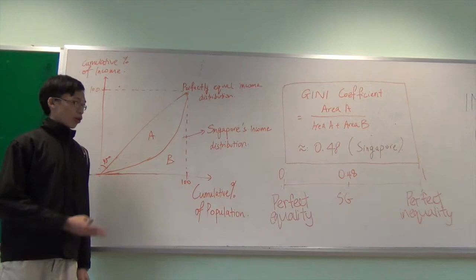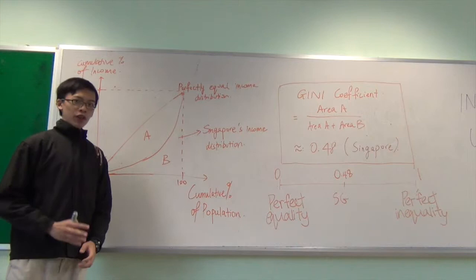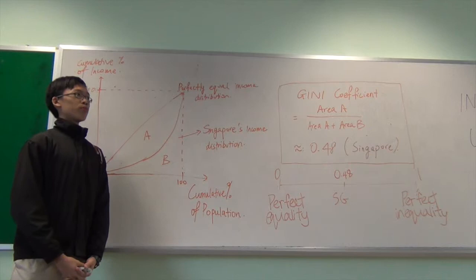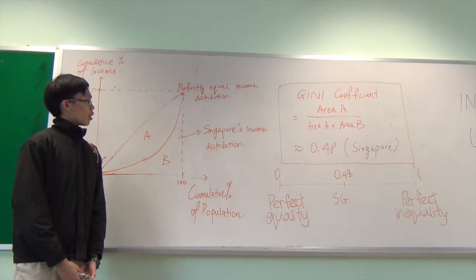Income inequality can be represented on what we call a Lorenz curve. As seen from this diagram, the line which makes 45 degrees with both horizontal and vertical axis is what we call the perfectly equal income distribution curve. Whereas for Singapore's income distribution, it lies below this ideal curve and there is a divergence between these two curves which is an indication that income inequality is present in an economy.